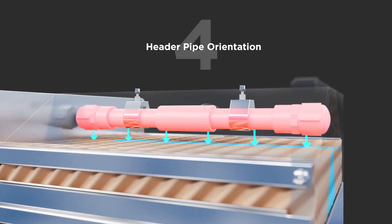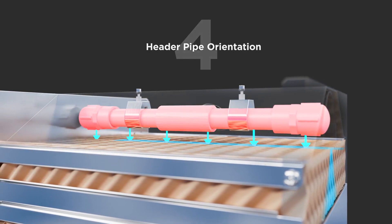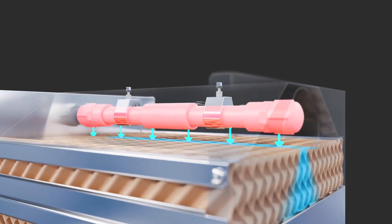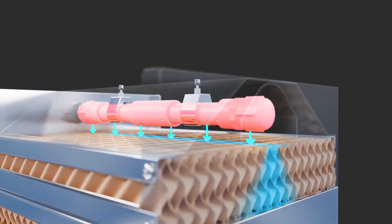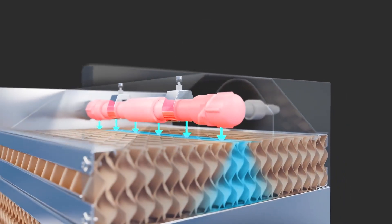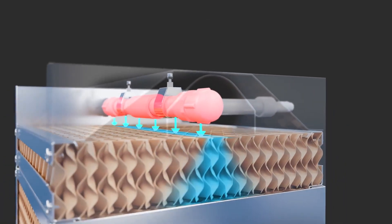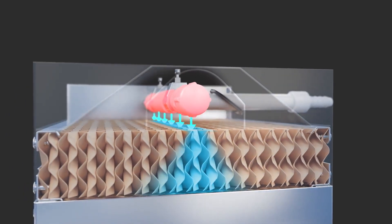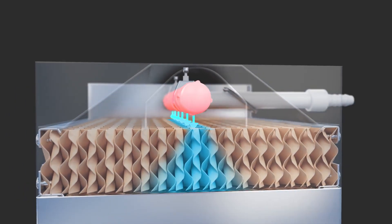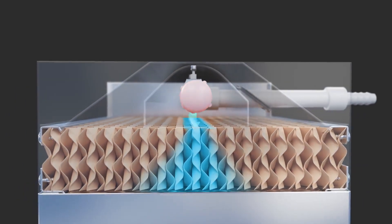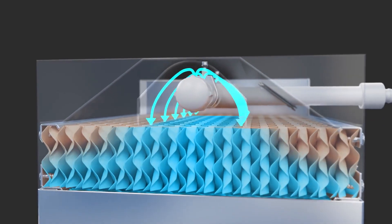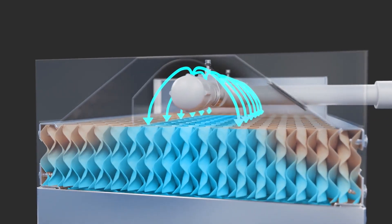Improper header pipe orientation. When the header pipe points directly down at the media, it can lead to water particle overload and reduced efficiency. Align the holes upward at a 90-degree angle to create a parabolic water stream and even distribution.